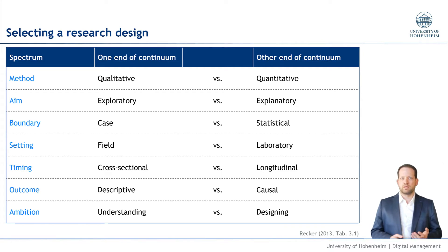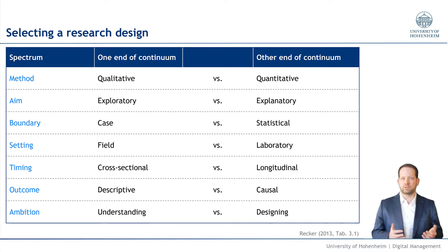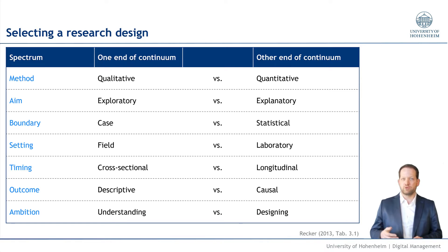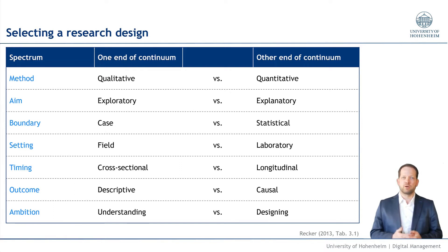The next dimension is the timing. A cross-sectional study, for example, surveys many individuals or many firms at one point in time. Or a longitudinal study, observing the same individuals, the same firms or whatever unit of analysis over time, with multiple observations for each individual or firm.